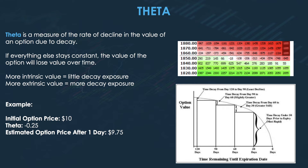Theta is a measure of the rate of decline in the value of an option due to time decay. Whenever we're talking about time decay, we're always talking about Theta. To keep it simple: if everything else stays constant, the value of the option will lose value over time.